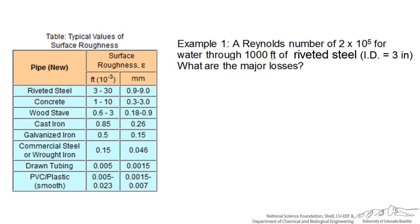Let's go through an example on how to read this plot. In the first example, we are told that we have a Reynolds number of 2 × 10^5 for water through 1000 feet of piping that has an inner diameter of 3 inches, and we are asked to figure out what the major losses are. When we think about major losses, we will write h_L as our head loss, and we are going to say that equals the frictional factor times the length of pipe over the diameter times our velocity squared over 2g.